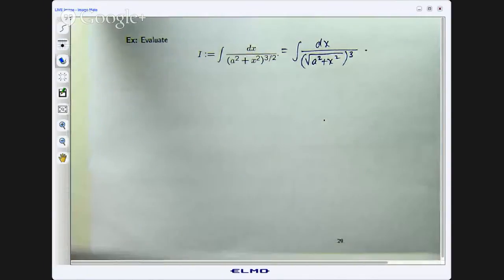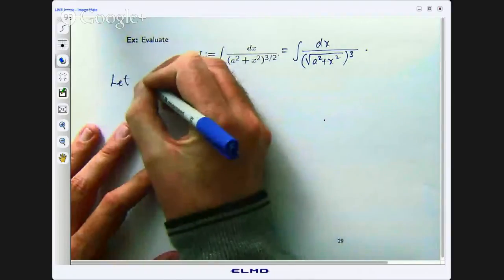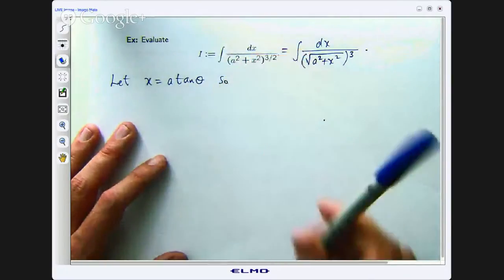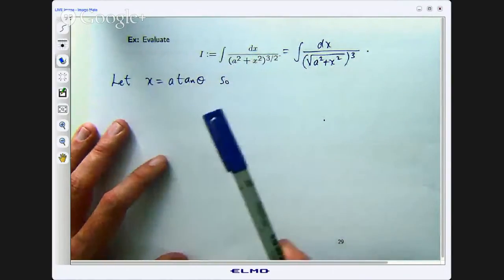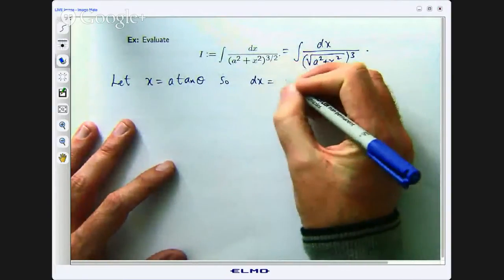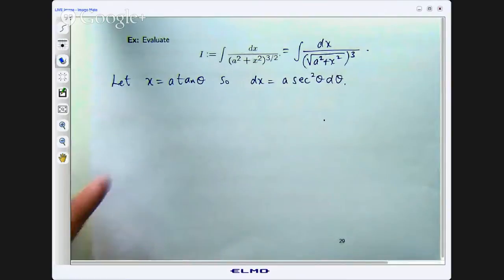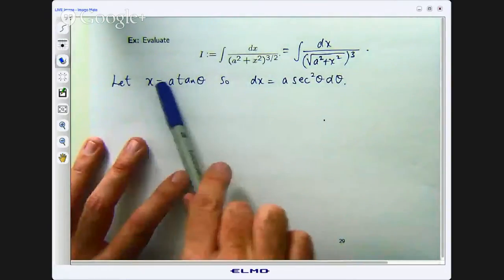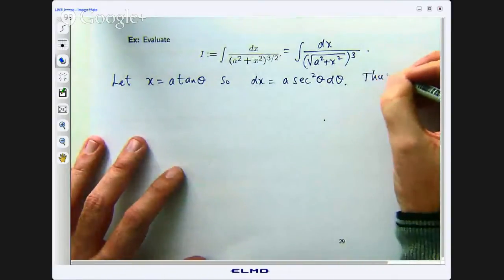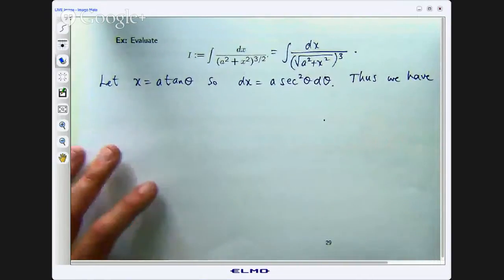So I am just going to use the basic trig substitution x equals a tan theta and see where it gets us. Alright. So we are going to let x equal a tan theta. A is just a number here. So dx, if I differentiate tan I get sec squared. So dx is going to be a sec squared theta d theta. So let us sub this in for the x's and this in for the dx's and we will get the following.